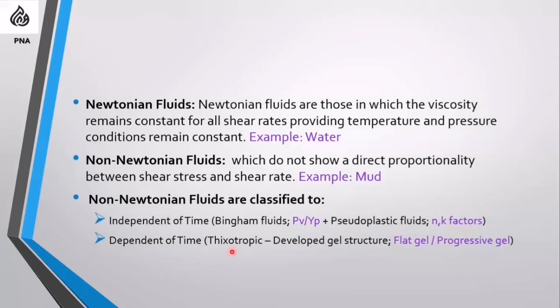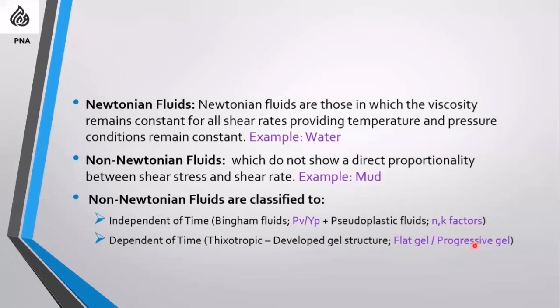For time-dependent fluids, if the fluid over time develops gel structures, we call it thixotropic. Thixotropic means viscosity is dependent on time. We have two types of gel: flat gel, which is easy to break and not too much gel — just enough to suspend cuttings — and progressive gel, which is not recommended because it's hard to break on circulation restart and may increase pressure enough to break the formation.